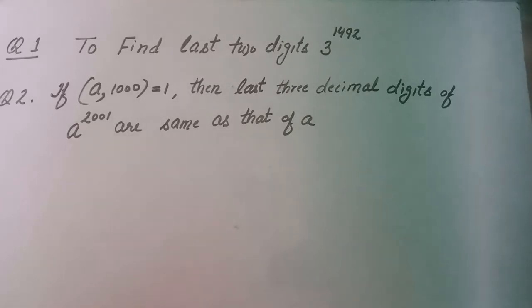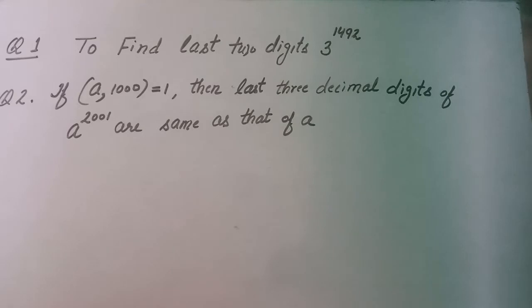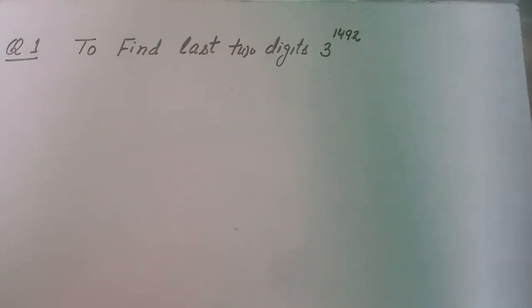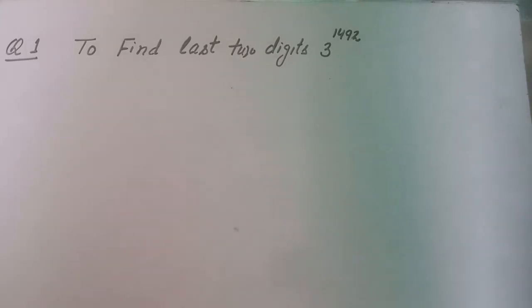As part of Euler phi function applications, we will discuss two important questions. The first is: how can you find the last two digits of the number 3 raised to power 1492? The second question is: if a is a number which is co-prime to 1000, then the last three decimal digits of a raised to power 2001 are the same as those of a. These questions exhibit the properties and applications of Euler phi function.